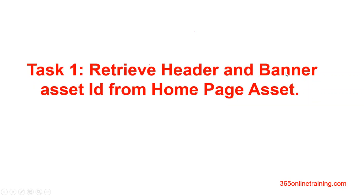Task one is retrieval of header and banner asset ID from a homepage asset. In this task, the page has two assets attached to it — one asset is header and the other one is banner. Using controller, we will retrieve the ID of header and banner.